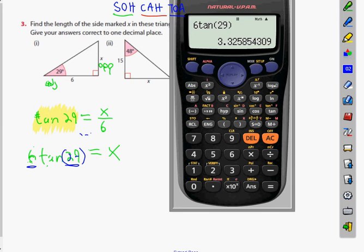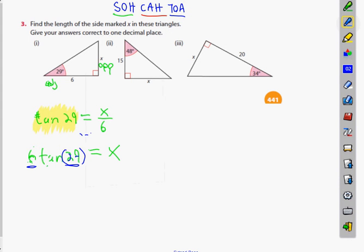So you're looking for 6 times tan 29 in the calculator. So 6 and 29 and what you get here is 3.33, or 3.3 to one decimal place. Now can anybody tell me what function do I use this time? Tan? Tan again.